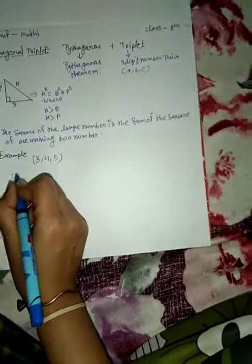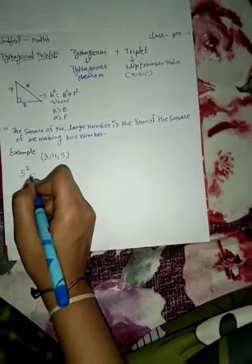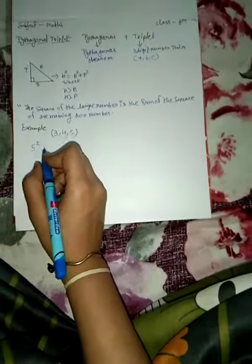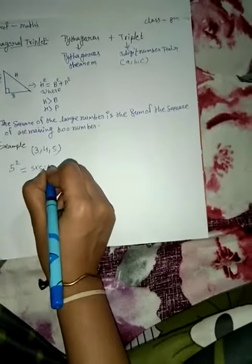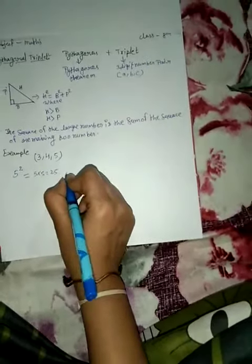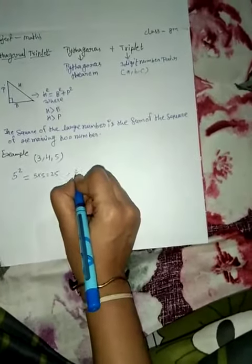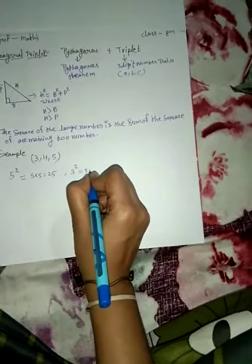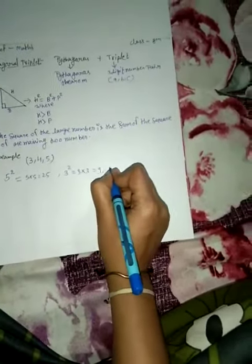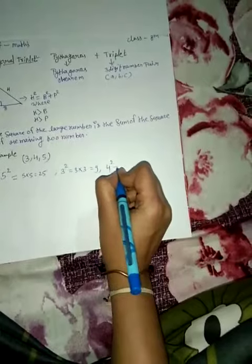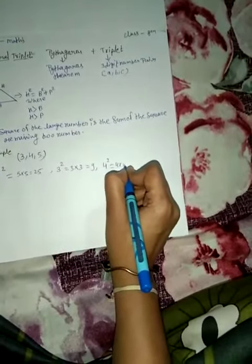As you know, the square of 5—I told you in the first class—5 squared means 5 multiply 5, that is 25. Now we consider 3, so 3 squared means 3 multiply 3, that is 9. And next one is 4 squared, 4 multiply 4, that is 16.